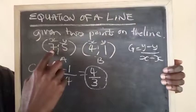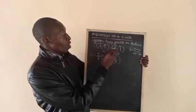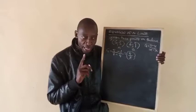So our gradient is 4 over 3. That's the gradient. Now that we have the gradient, we want to get the equation of the line. In the brackets, you can choose either one.